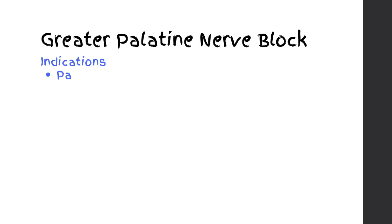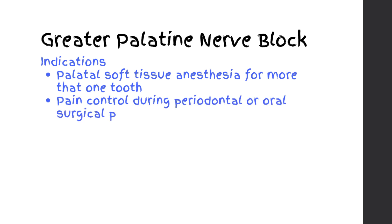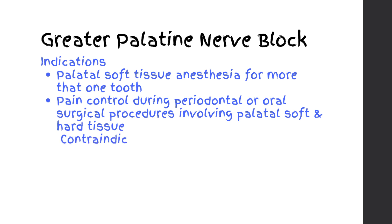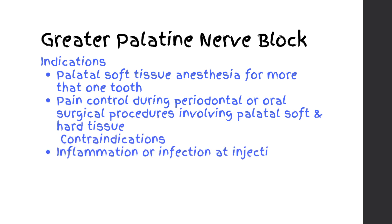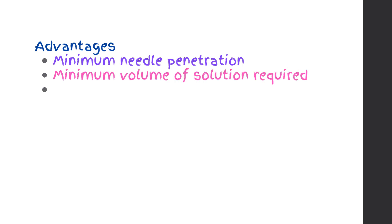Greater Palatine Nerve Block. Indications: palatal soft tissue anesthesia for more than one tooth; pain control during periodontal or oral surgical procedures involving palatal soft and hard tissue. Contraindications: inflammation or infection at injection site; smaller areas of therapy. Advantages: minimum needle penetration; minimum volume of solution required; minimum patient discomfort.